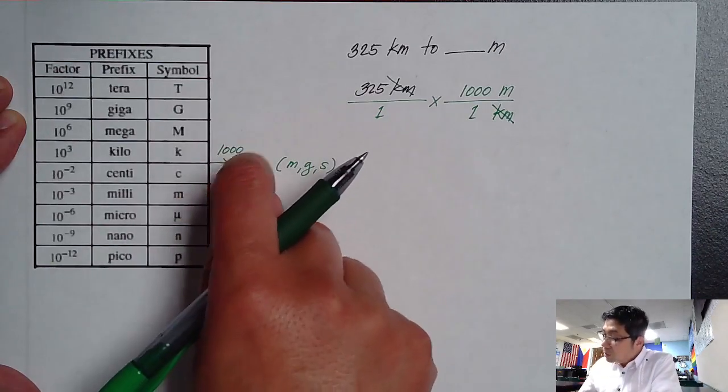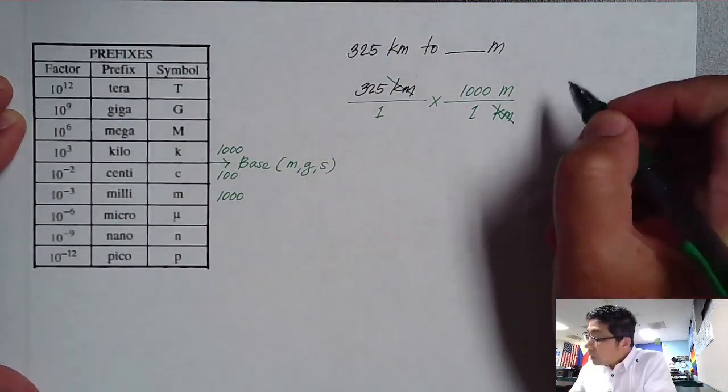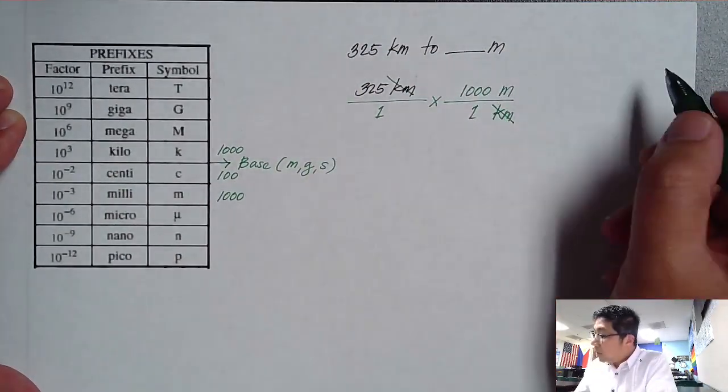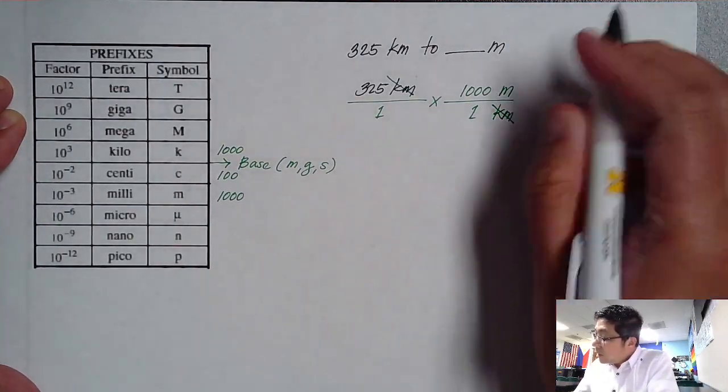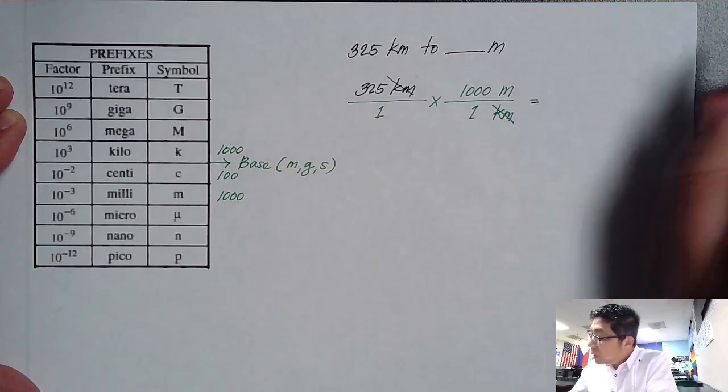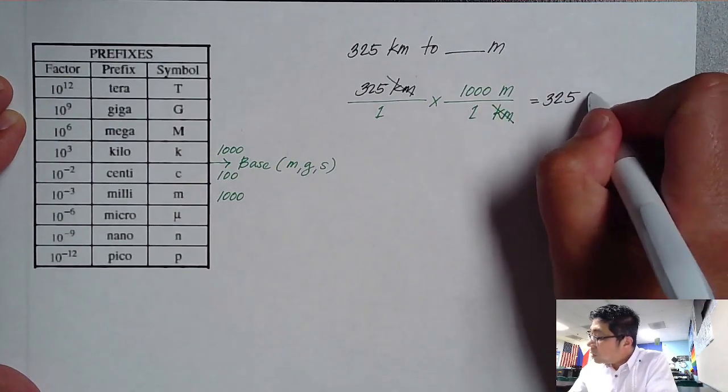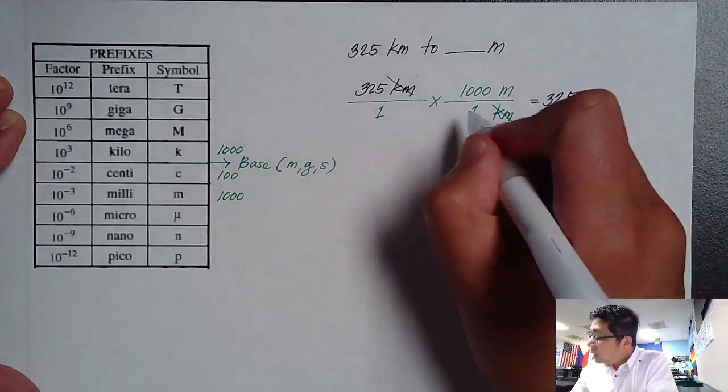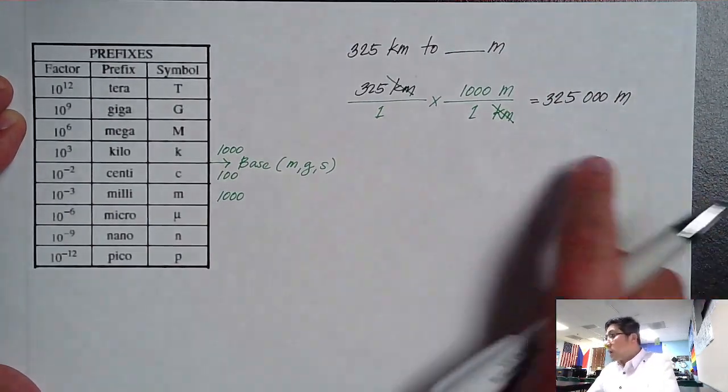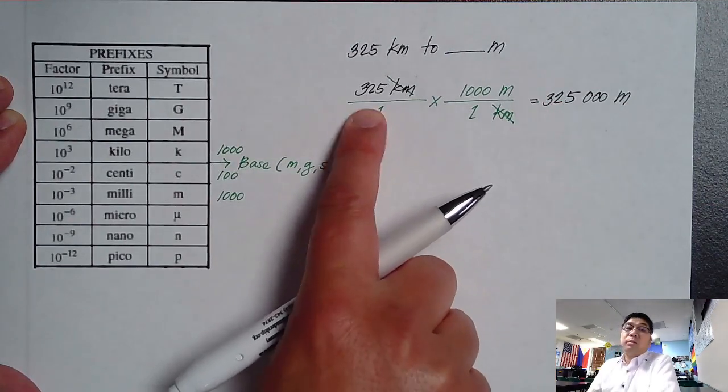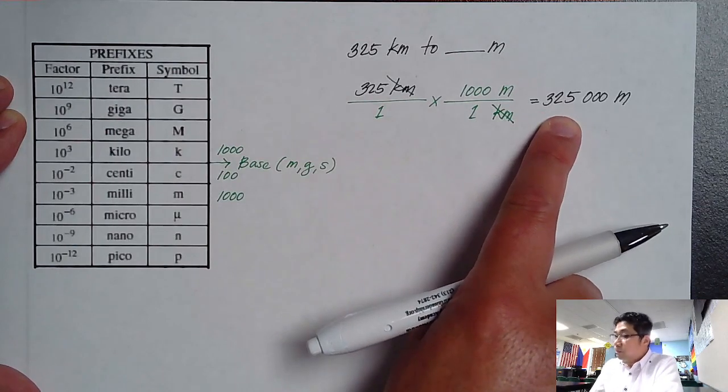So 325 multiplied by 1,000. Now my kilometers is canceled. So therefore, I would have an answer that is equivalent to 325 and then there's three zeros. So therefore, that will give us 325,000 meters, which makes sense because 325 kilometers means there's 325,000 meters.